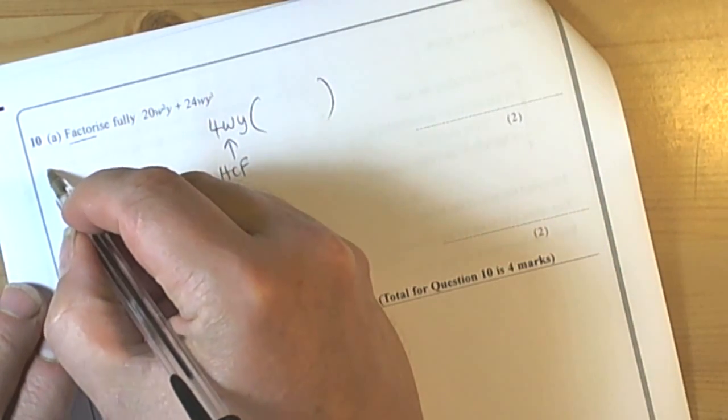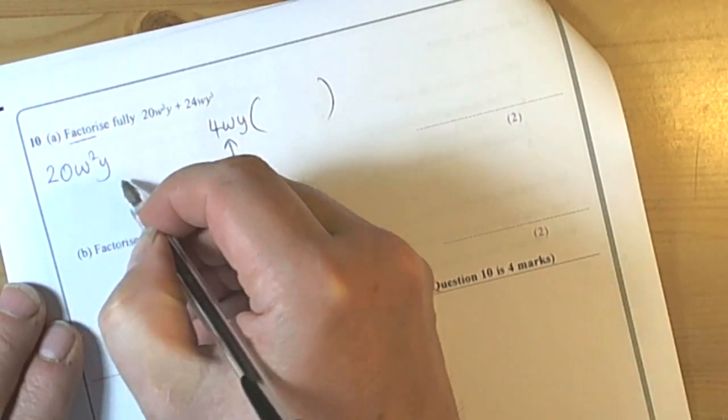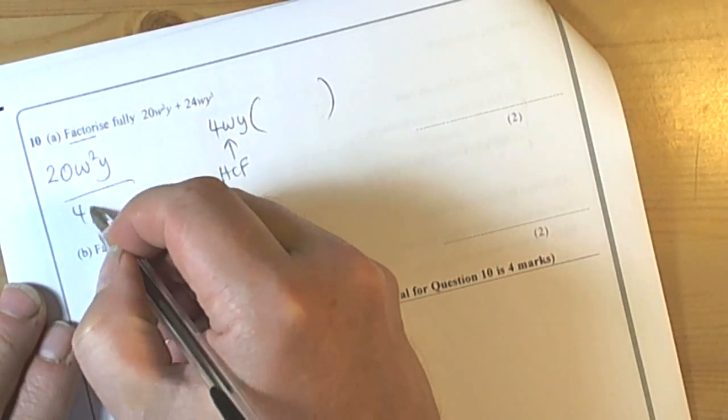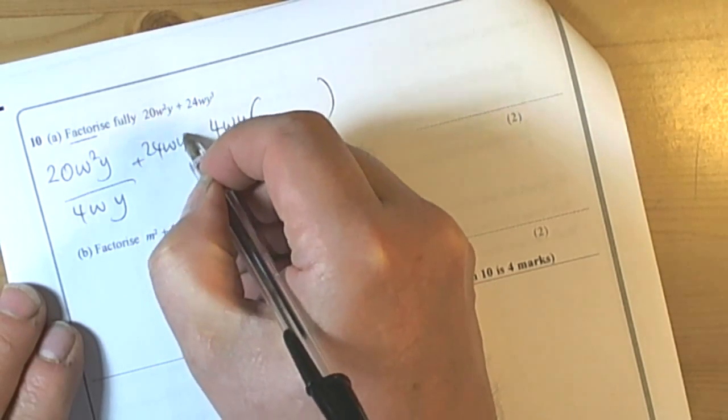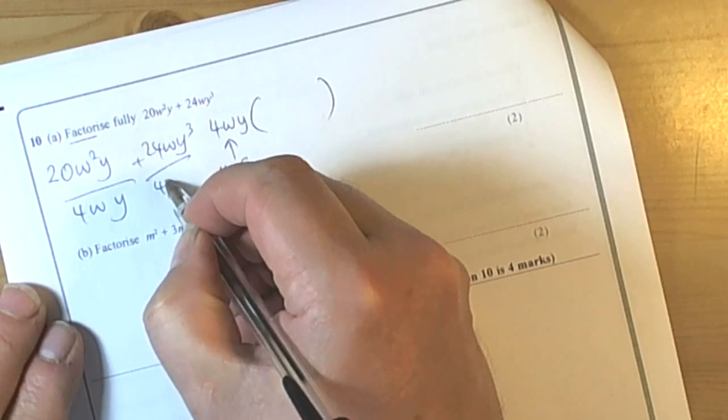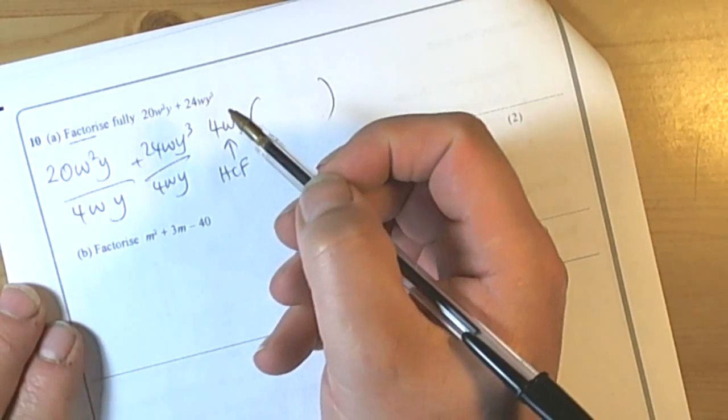So we take each of those terms: 20W squared Y and divide it by 4WY, and 24WY cubed and divide that by 4WY. What we get left from here goes inside the factor area, inside the bracket.